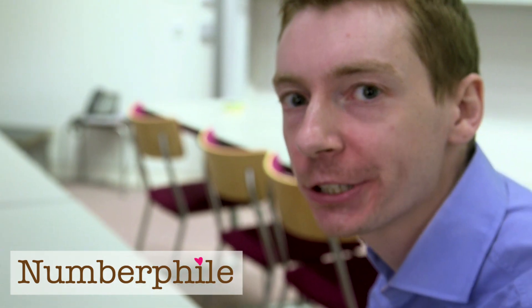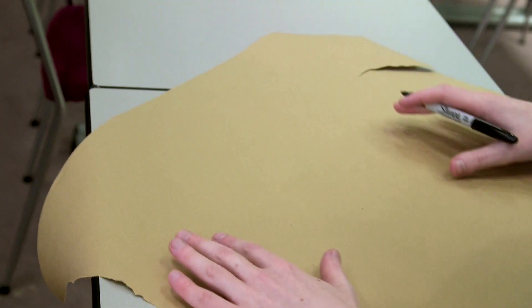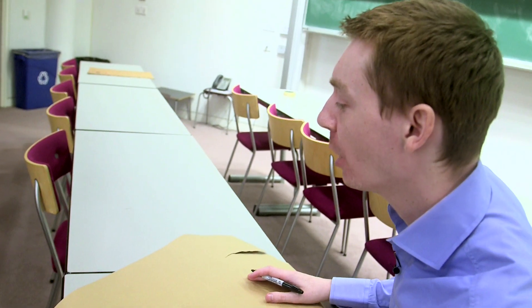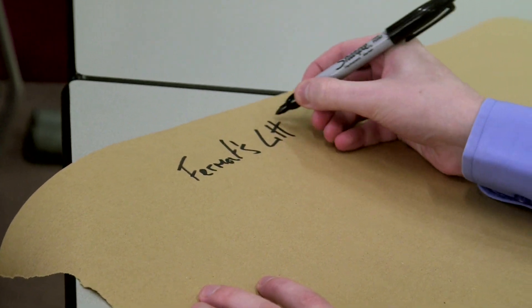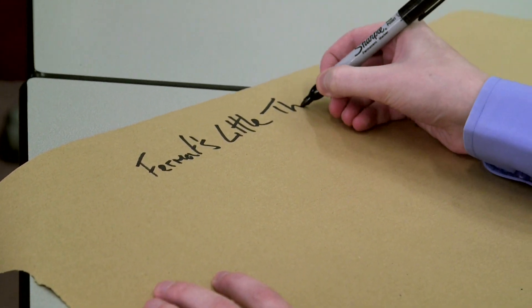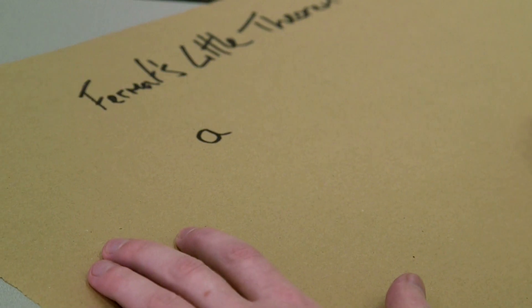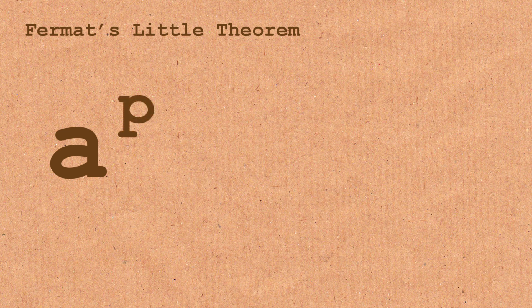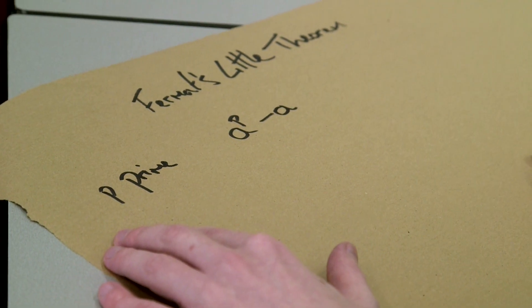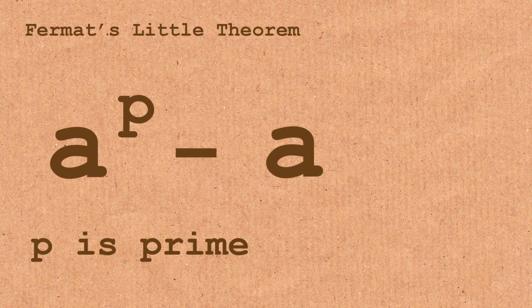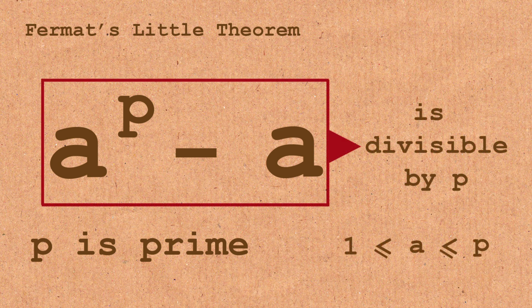Let's have a look at one of these tests they apply to see if a number is prime or not. We're going to use Fermat's Little Theorem, a theorem about prime numbers. What it says is: if you have a number a, and you raise it to the power of a prime number p, then subtract the original number, the result is divisible by p. That's always true for whatever number a you pick.